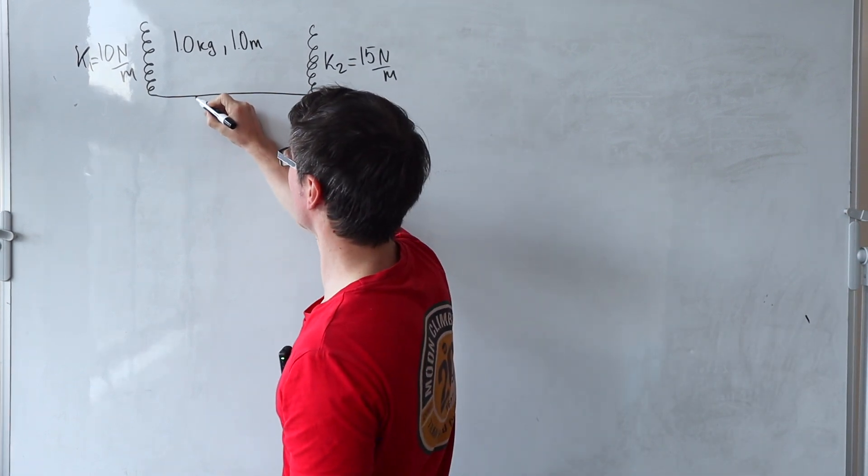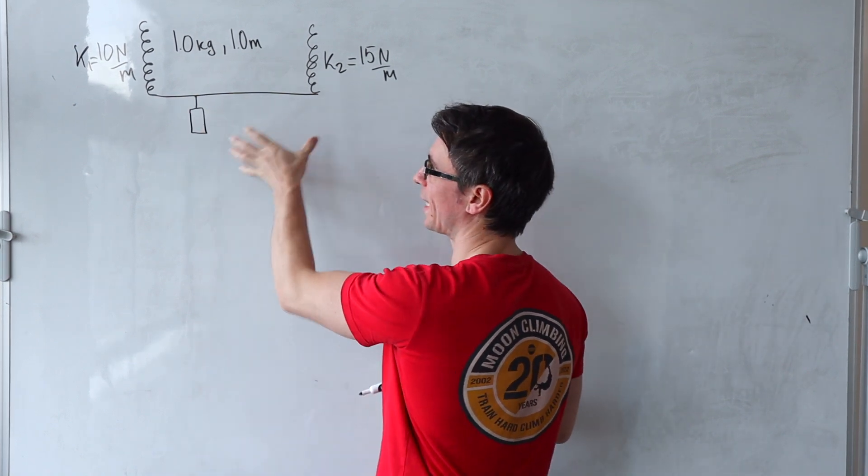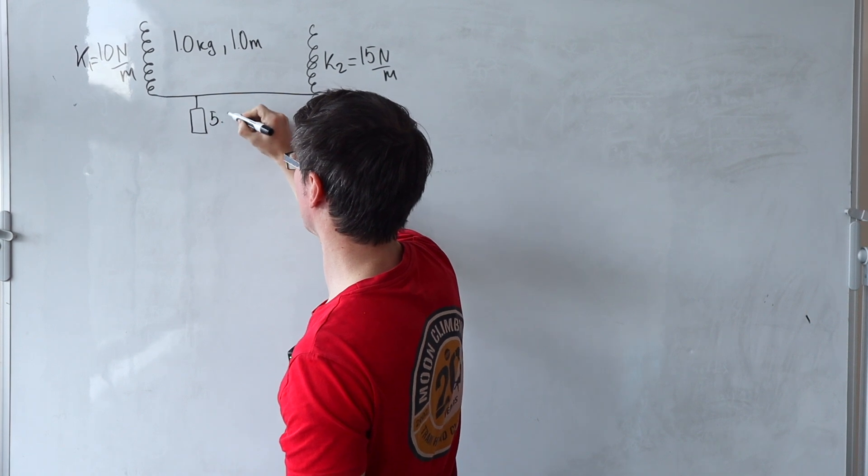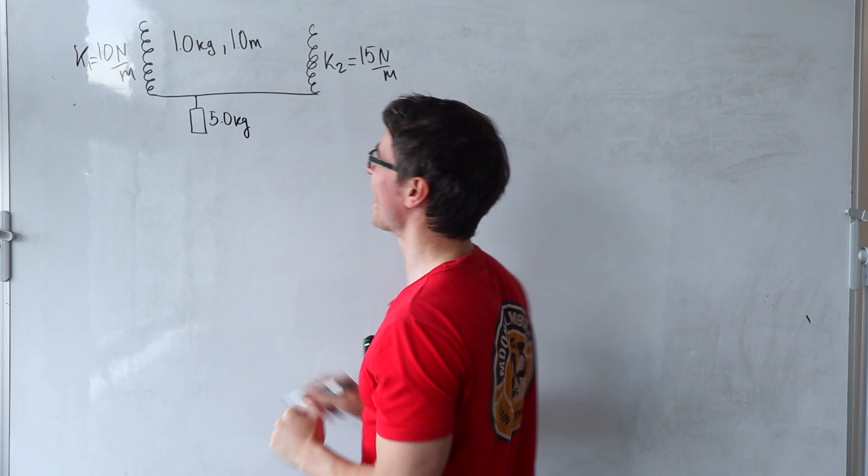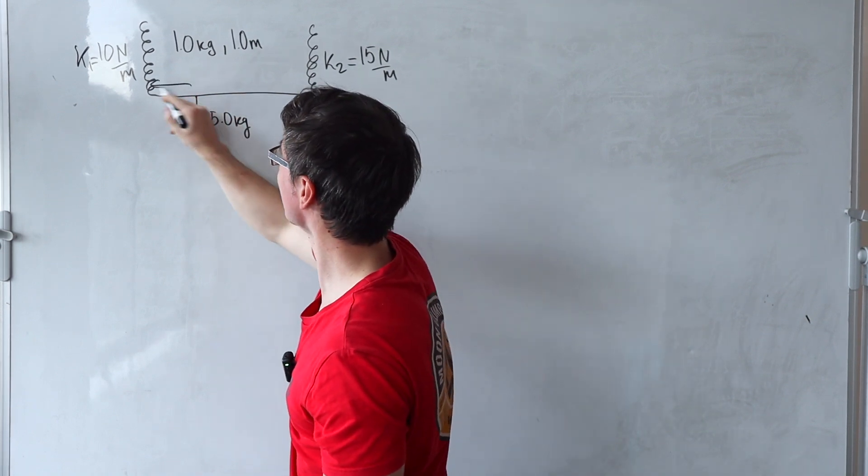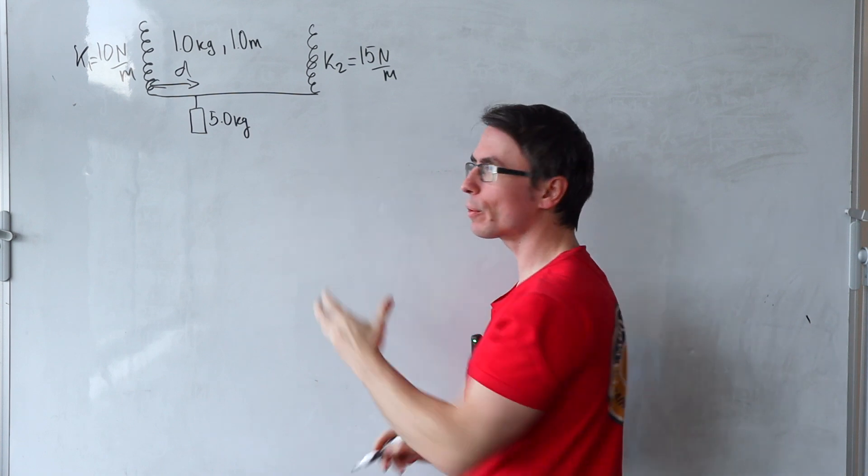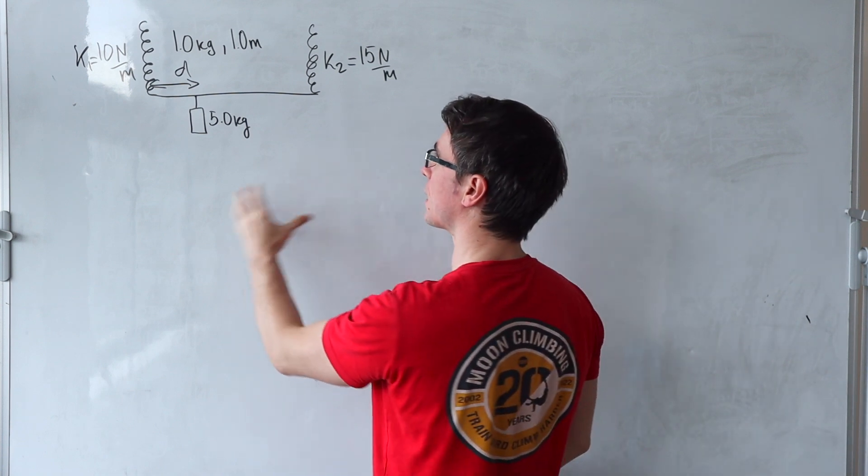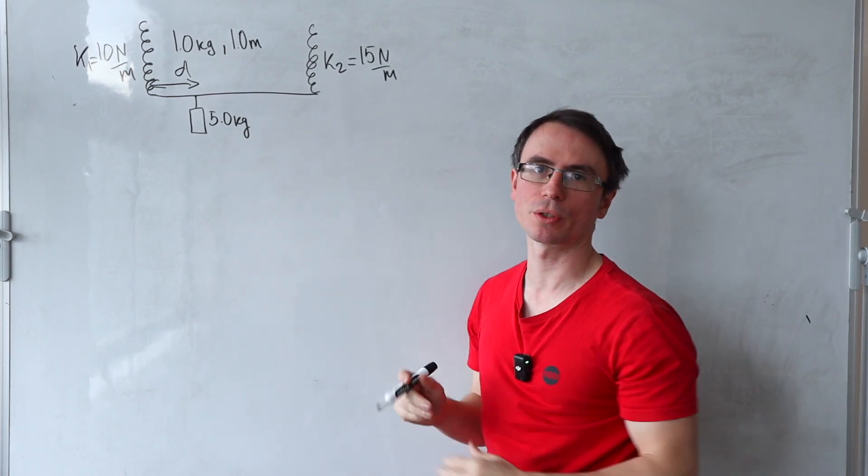I'm going to attach a mass somewhere along the length of the bar. Let's say that the mass has a mass of five kilograms and it's at a distance d away from one of the springs. My question is what is this distance going to be if the bar is to remain horizontal?